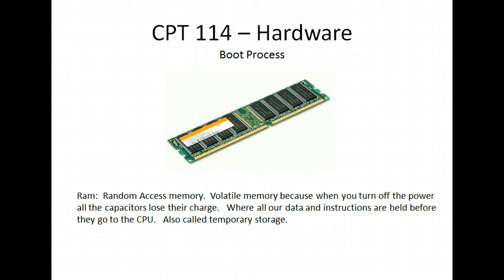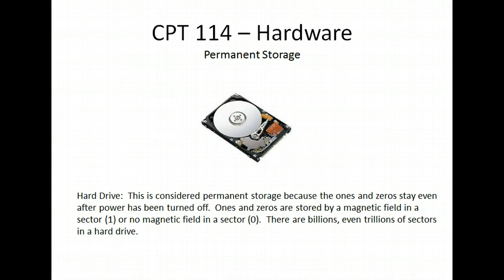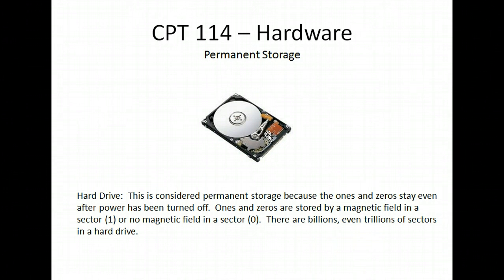Let's talk about how we store information — permanent storage. The first type is a hard drive, and that is magnetic storage. It's magnetic because it has a coating on it that we can either magnetize or not. If it has a magnetized sector, then it's a 1. If that sector is not magnetized, then it's a 0. We simply change the settings in those sectors, and when a read and write head goes over it, as you can see right here, it reads that and turns it into digital information, sending it to the central processing unit or random access memory.